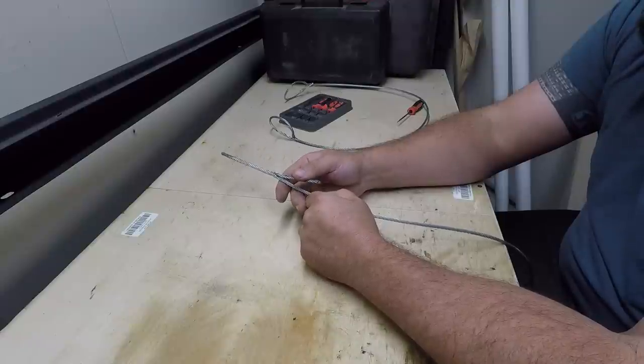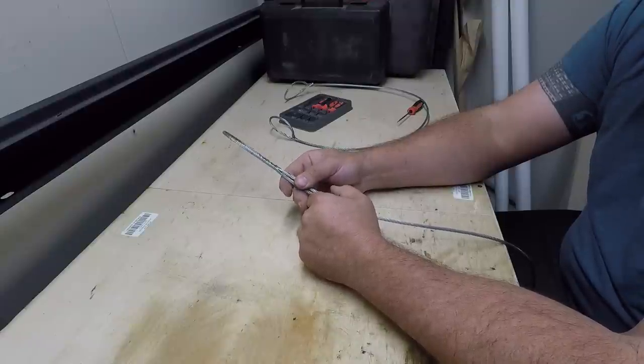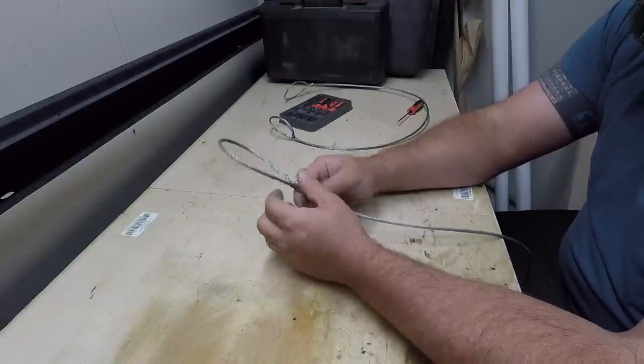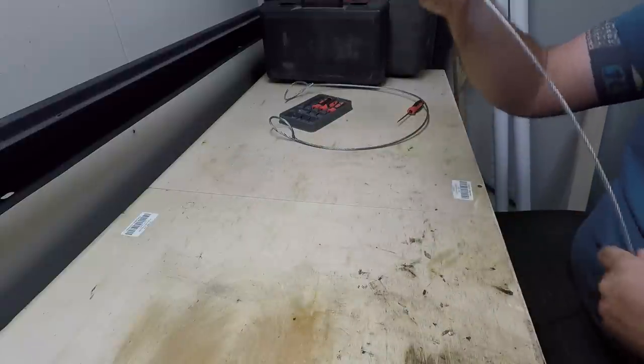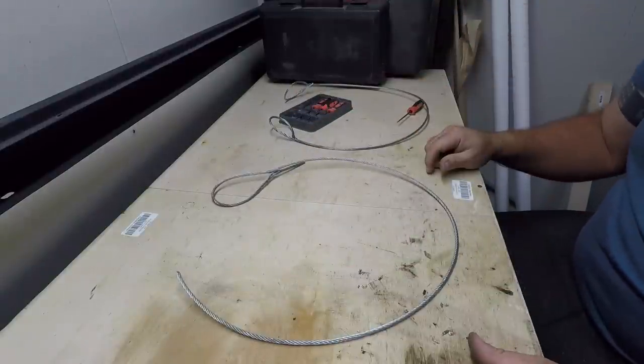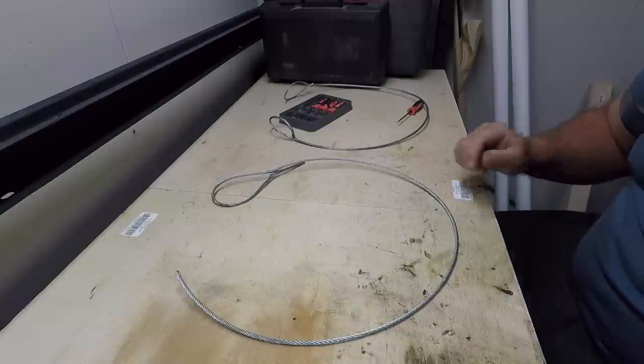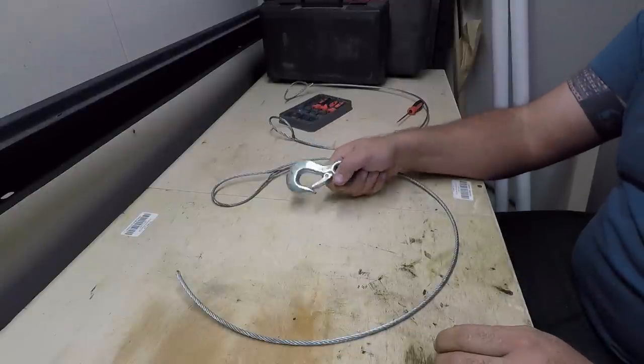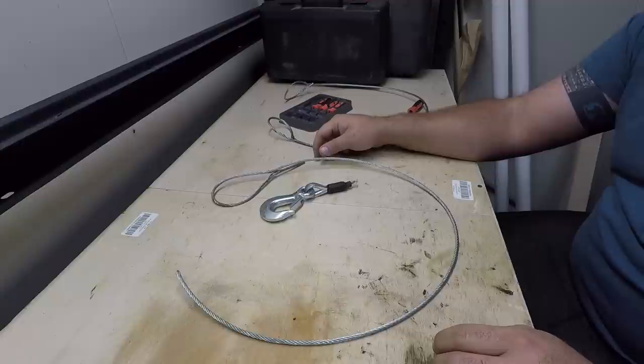So that's the three different ways of braiding a Flemish eye. You can tell I'm a little bit rusty, haven't done it for a while. But if you're out in the woods, your winch cable breaks, and you need to put that back on, that is how you do it.